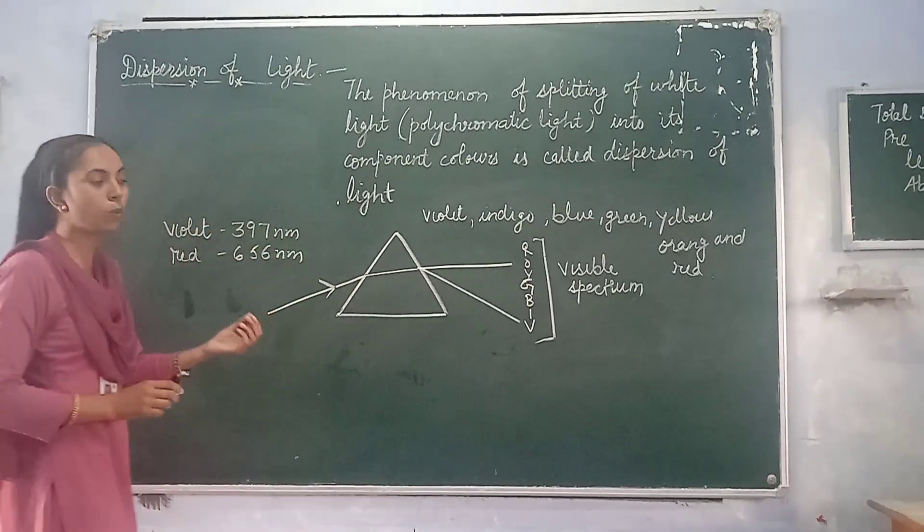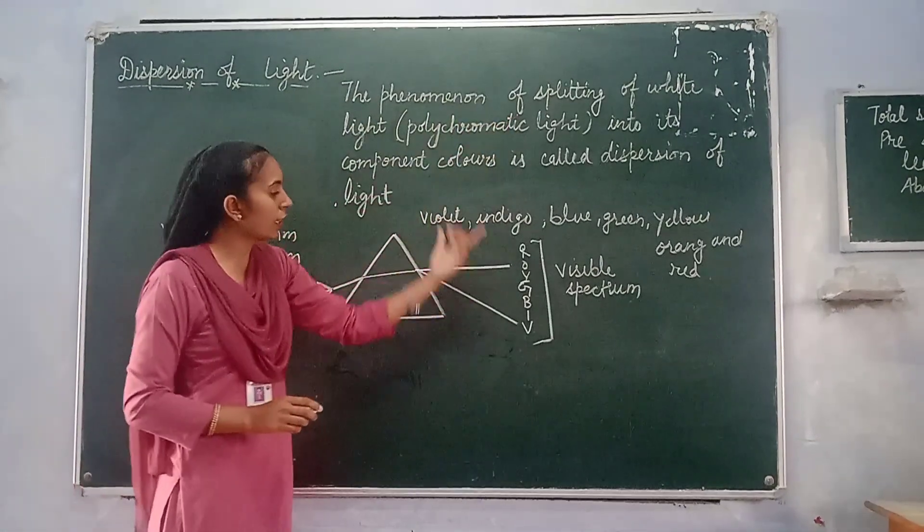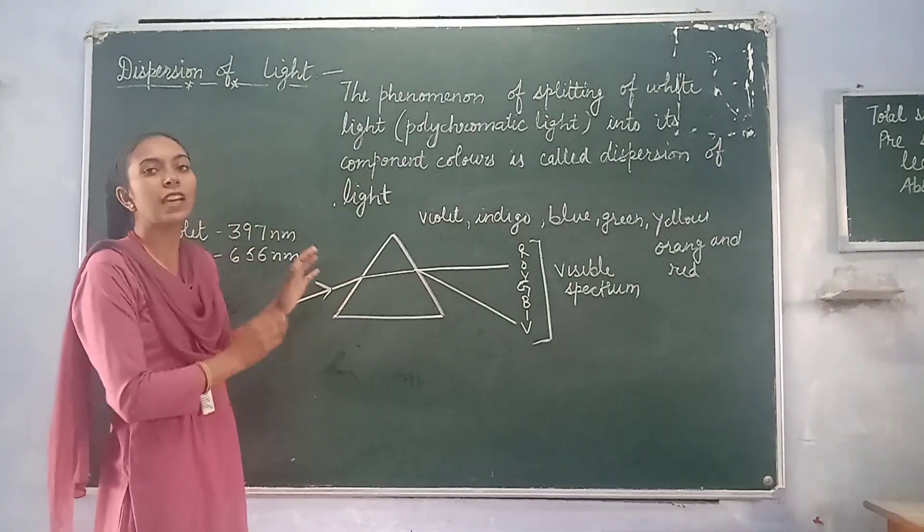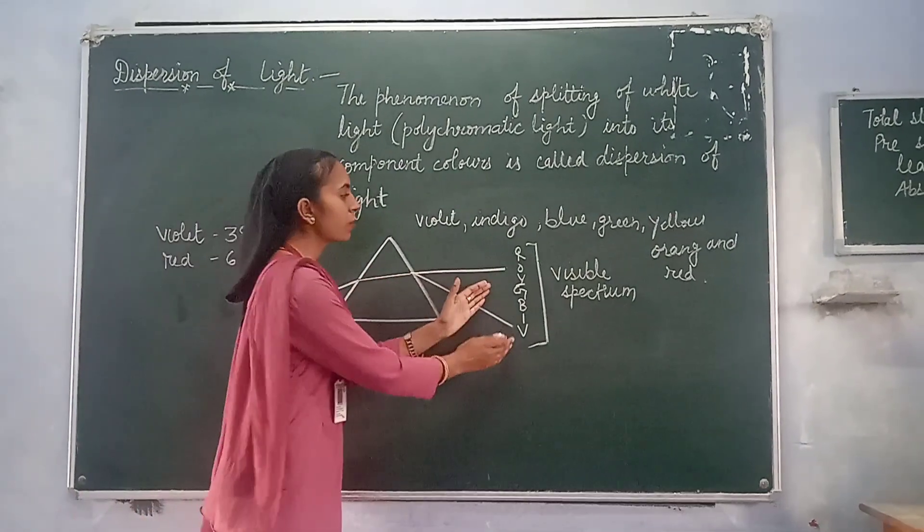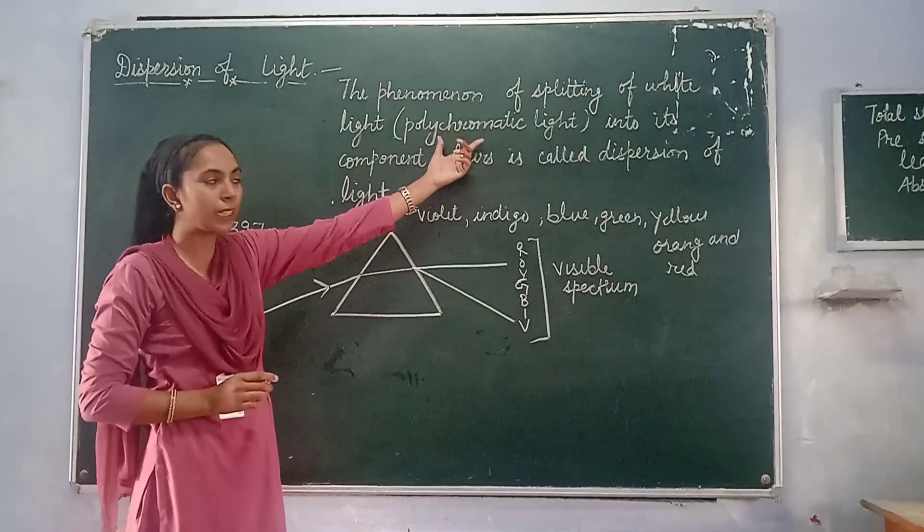Actually, the prism cannot itself create the colors, but it only splits the colors present in the white light into seven color bands. It just splits the colors which are already present in white light, which is also called polychromatic light.